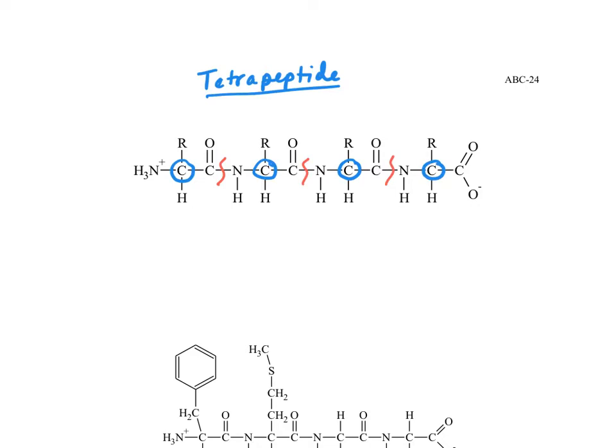Remember an alpha carbon always is going to have the same four groups around it: a nitrogen from an amine, a carbon from a carboxylate (although in this case the carboxylate is buried in the peptide bond over here), a hydrogen, and then the variable group which we'll call R here. So now we can see that we have four amino acids and we have to learn a little bit about some terminology of peptides.